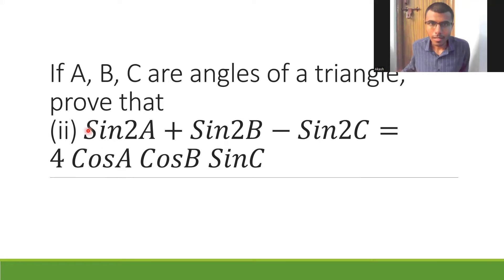Hello learners, now here we are given that A, B, C are angles of a triangle and we need to show that sin 2A plus sin 2B minus sin 2C is 4 cos A cos B sin C.